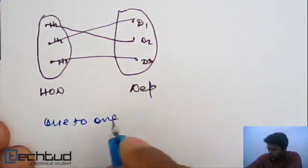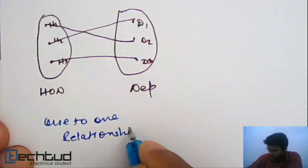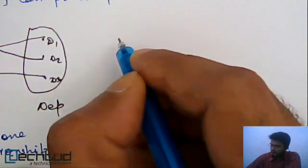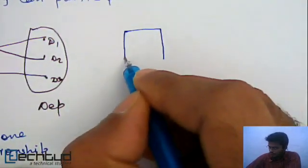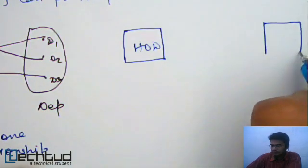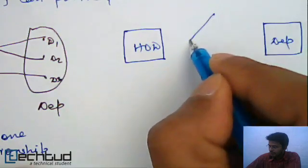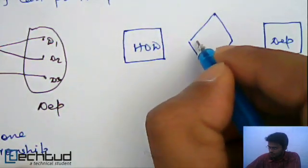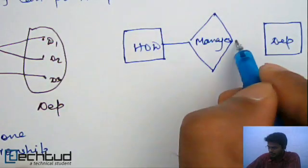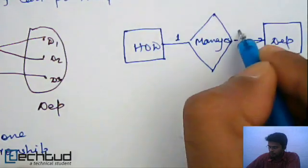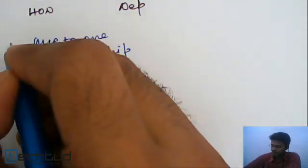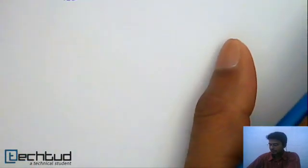Let's understand the one-to-one relationship in an ER diagram. We have entity HOD and entity department, and they have a relationship called 'manages' — HOD manages department. The cardinality will be one-to-one, since each department will have one HOD. This was the first type of cardinality ratio: the one-to-one relationship.